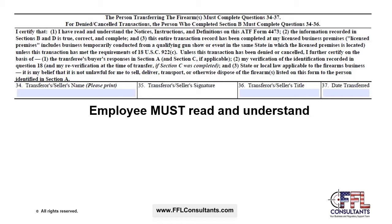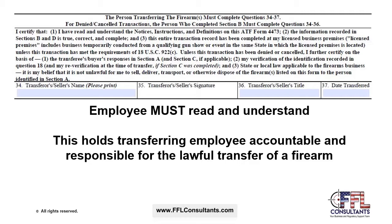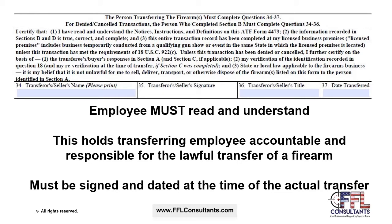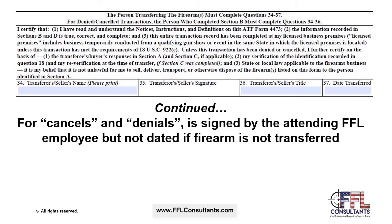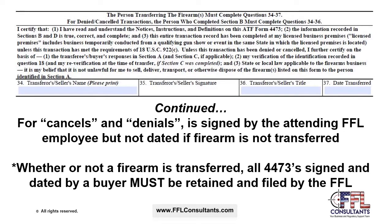Finally, we reach the certification that must be signed and dated by the FFL employee who is transferring the firearm to the transferee. Every employee should spend time reading and understanding the certification — it holds the transferring employee accountable for the lawful transfer of a firearm. This section must be signed and dated at the time of the actual transfer. All canceled and denied Form 4473 applications must be signed by the attending FFL employee who completed Section B. Because a firearm is not being transferred in those cases, Box 37 should not be dated. Whether or not a firearm is transferred, all Form 4473s signed and dated by a transferee must be retained and filed by the FFL. Cancels and denials must be kept on file for five years.